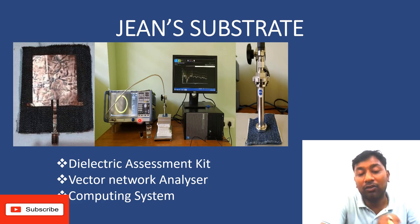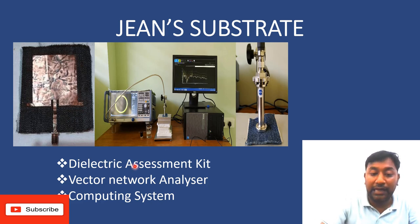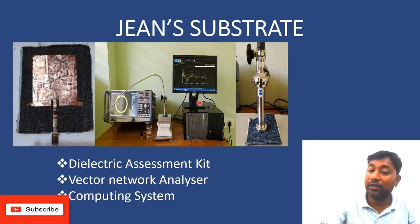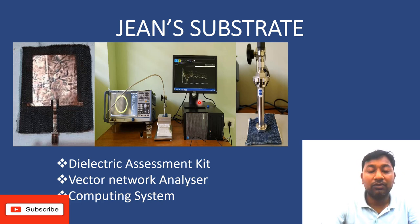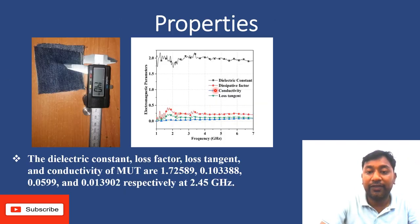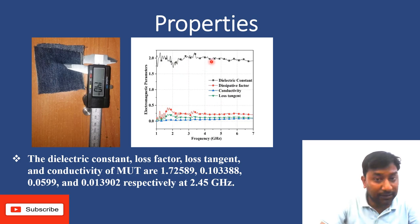The jeans substrate properties should be calculated. We can calculate them using a dielectric assessment kit, a vector network analyzer, and a computing system — these three things are required. After analyzing the jeans substrate, we get different values: dielectric constant, dissipation factor, conductivity, and loss tangent. These are the electromagnetic properties of the jeans substrate.